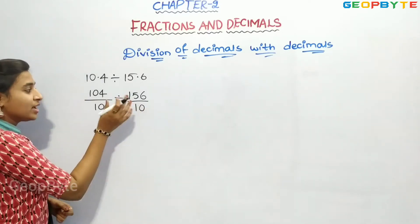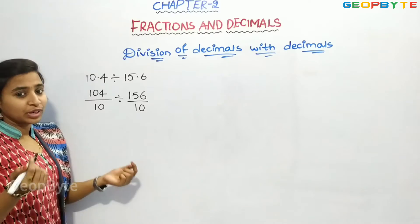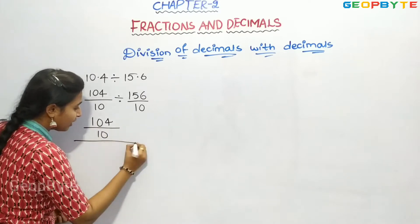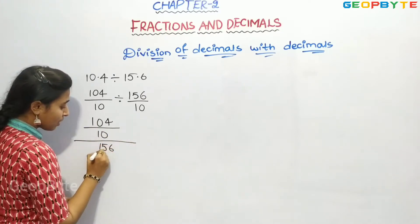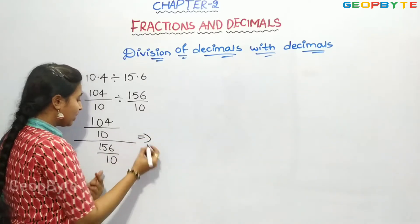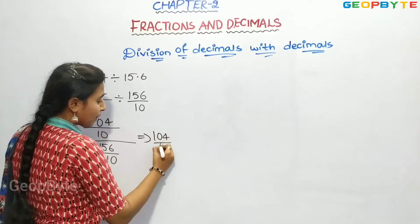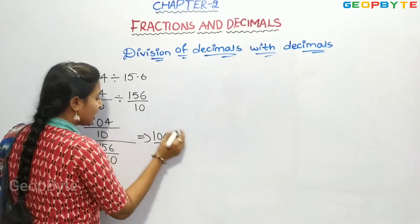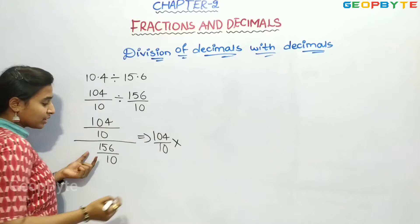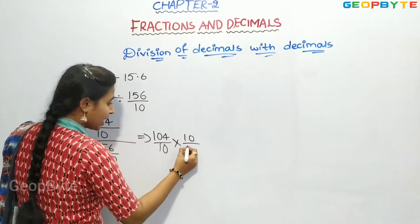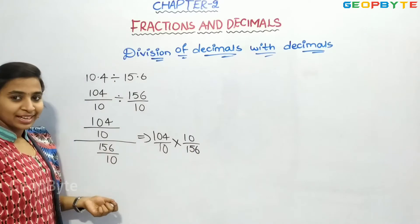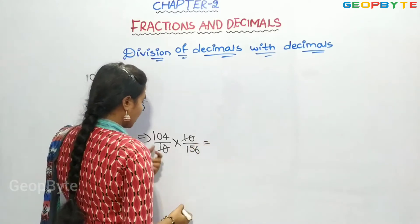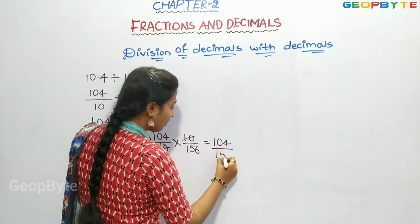Now we have to divide these two fractions. 104 by 10 whole divided by 156 by 10. We can write 104 by 10 as it is. This becomes reciprocal — the sign changes from division to multiplication. This becomes reciprocal, that is 10 by 156. Now 10 gets cancelled. The remaining numbers are 104 by 156.